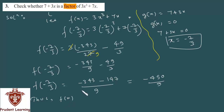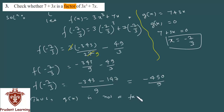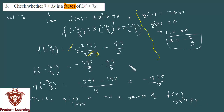आप लिख सकते हैं: thus, G(x) — क्योंकि यह factor है की नहीं वो चेक करना था — G(x) is not a factor of f(x)। G(x) कौन था आपके पास: 7 plus 3x is not a factor of 3x cube plus 7x। मैं दुबारा जल्दी से repeat कर रहा हूँ — check करना है कि 7 plus 3x, 3x cube plus 7x का factor है की नहीं।